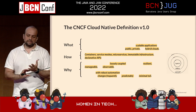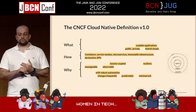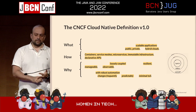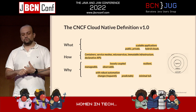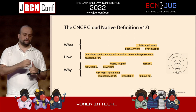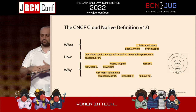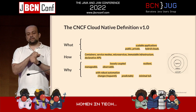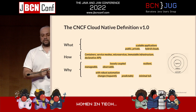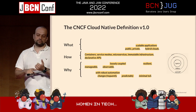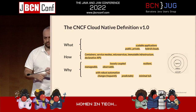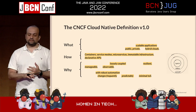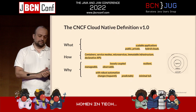We want to build scalable applications able to run on public, private, or hybrid clouds. We want to use containers, service meshes, microservices, infrastructure, declarative APIs, and all that — and this is how we do it. And why would we do that? Because loosely coupled is good, we've been told it's good and we've seen it's good. Resilient is definitely good. Manageable, observable, and all these kinds of things.